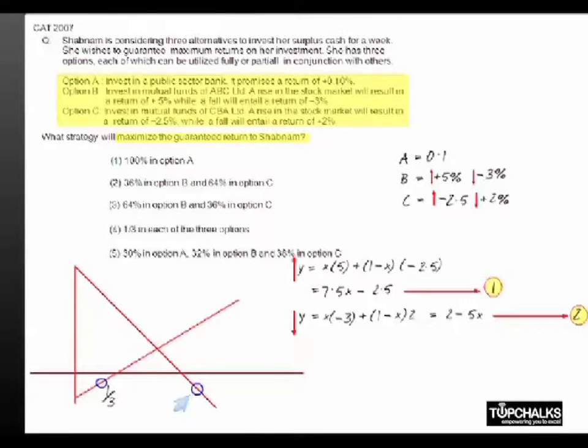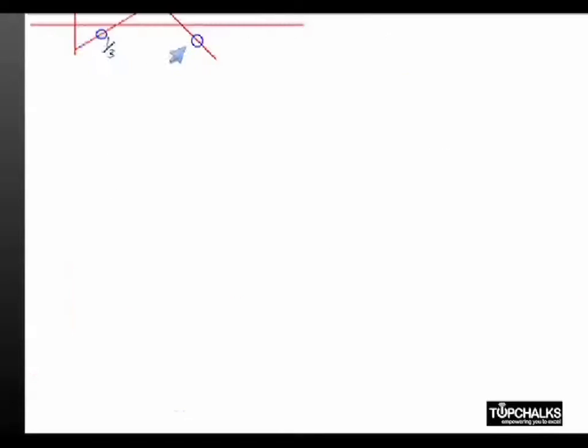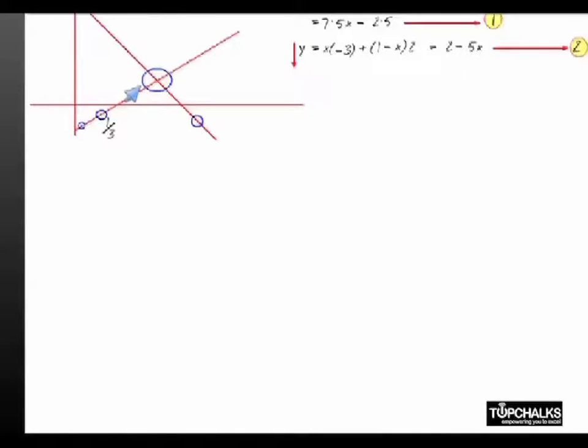Now at any value of X, the smaller of these two is the guaranteed option. So we want to maximize the guaranteed return. Hence we would choose such value of X that gives us the maximum value of the minimum of these two curves, which implies that at this point whatever is the value of X we will check what is the return on investment. And if this return on investment is greater than 0.1%, we will make sure that we invest that fraction in option B and the rest of it in option C.